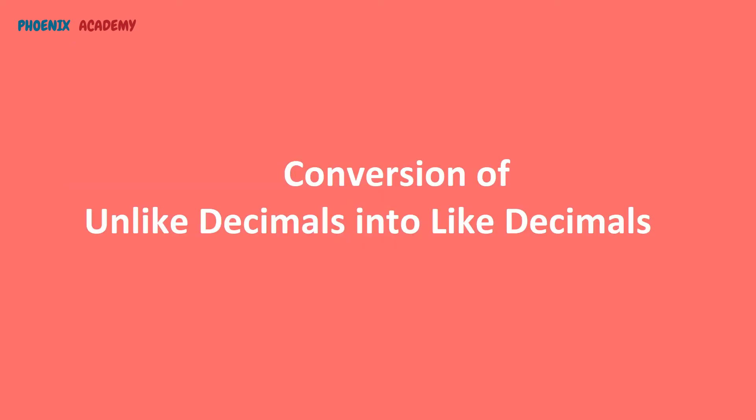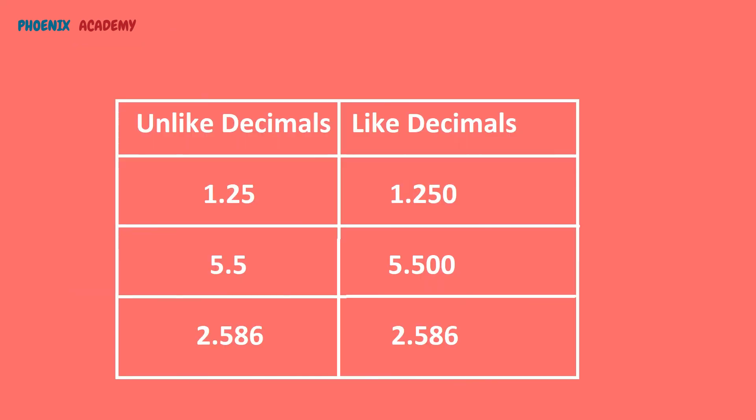Like and unlike decimals: decimals having the same number of decimal places are called like decimals. Decimals having different numbers of decimal places are called unlike decimals. For the conversion of unlike decimals into like decimals, we use the principle that adding zeros to the right of the decimal point does not change its value. Here, 1.25, 5.5, and 2.586 are unlike decimals.